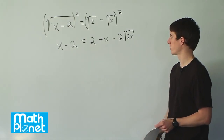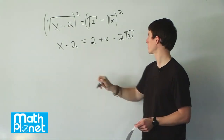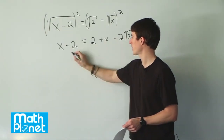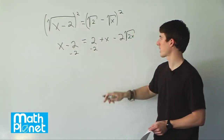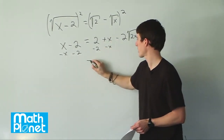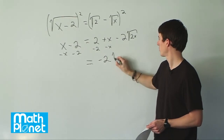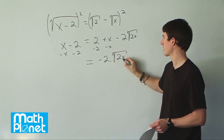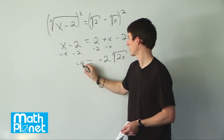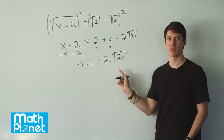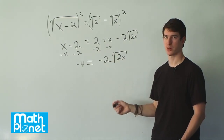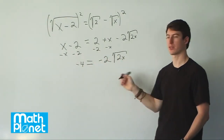So we're getting close. We still have a root x, which is a bit of a problem, but we can start to simplify and see what we can do. Let's simplify both sides: we have number terms, x terms, and then this root 2x term. Let's start by subtracting 2 from both sides and subtracting x from both sides. That clears things up — on the right-hand side we just have negative 2 root 2x. On the left side, the x's cancel as well, and we just get negative 4.